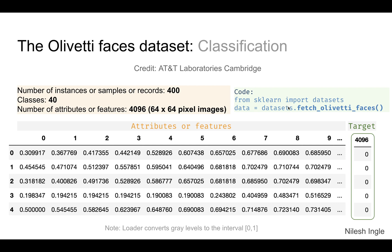In the previous video we used the load command; here we use fetch — specifically `fetch_olivetti_faces` — which will pull all the data and put it in the variable. One thing to note is that the values are automatically converted by the loader to be within the range zero to one, so all the values are floats.